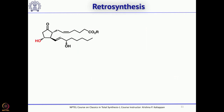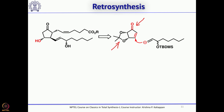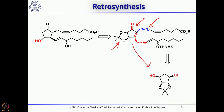From a retrosynthetic point of view, they thought the product could be obtained from a substituted cyclopentenone bearing two protected hydroxyl groups. A vinyl lithium species — converted to a vinyl copper — adds to the cyclopentenone in a 1,4 fashion, then quenched with an electrophile. The starting material is almost the same as what Gilbert Stork used, and it can be obtained from cyclopentadiene.